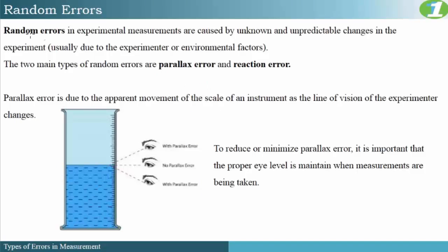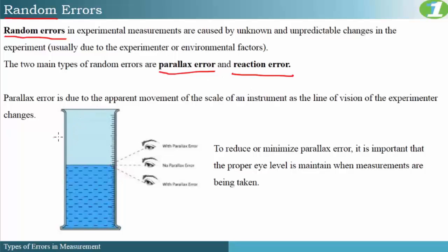Our other main type of error is termed random error. Random errors in experimental measurements are caused by unknown or unpredictable changes in the experiment, and are usually due to the experimenter or environmental factors. The two main types of random errors are parallax error and reaction error. So to recap: under systematic error we had zero errors and calibration errors; under random errors we have parallax error and reaction error. Let us look at the first type — parallax error.